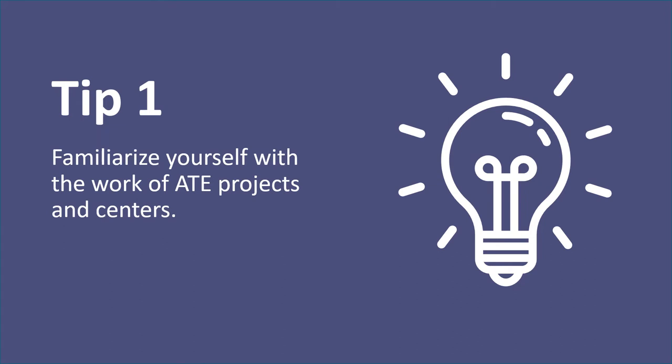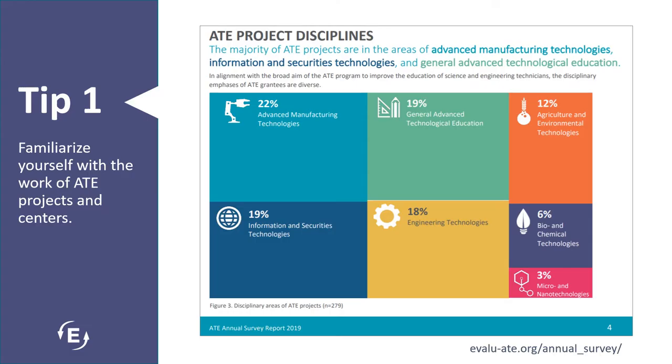The first tip for using the ATE survey findings to write a data-informed proposal is to familiarize yourself with the activities and achievements of ATE projects and centers. This will give you a sense of what the ATE program is currently funding and what grantees are doing. For example, almost a fourth of ATE projects in 2018 were in the area of advanced manufacturing technologies, followed by information and securities technologies and general advanced technological education.